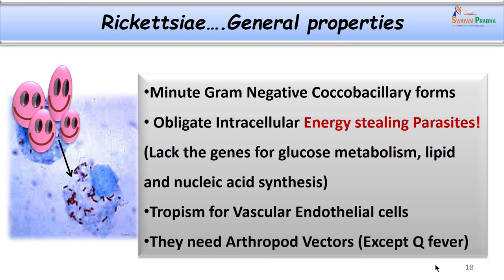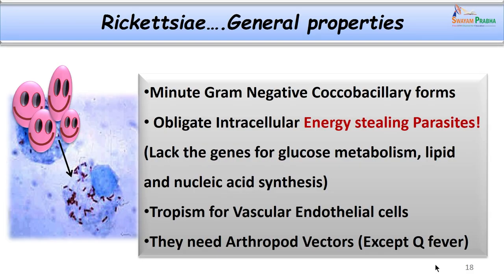These organisms are a group of pleomorphic, minute, coccobacillary forms. They are non-capsulated and non-motile. They were initially considered viruses because they were intracellular and needed live cells to grow and multiply. However, they were reclassified as bacteria because they have both DNA and RNA, and because of other resemblances to bacteria they are now considered among the smallest existing bacteria. They are obligate intracellular parasites, also called energy-stealing parasites.